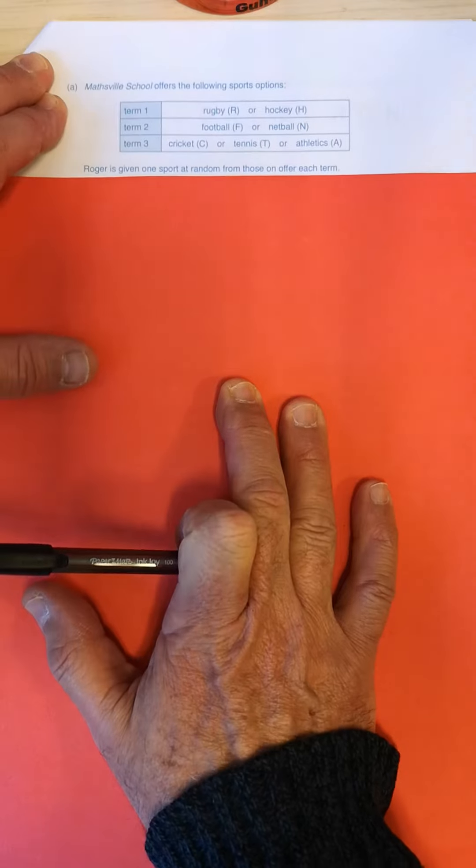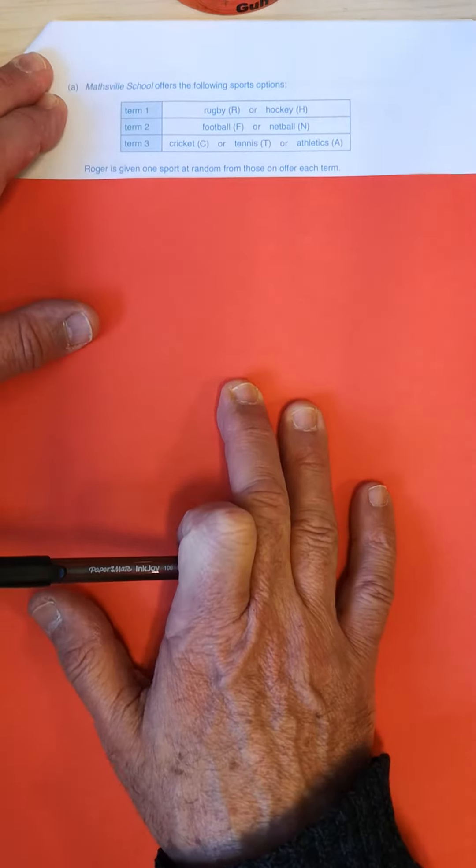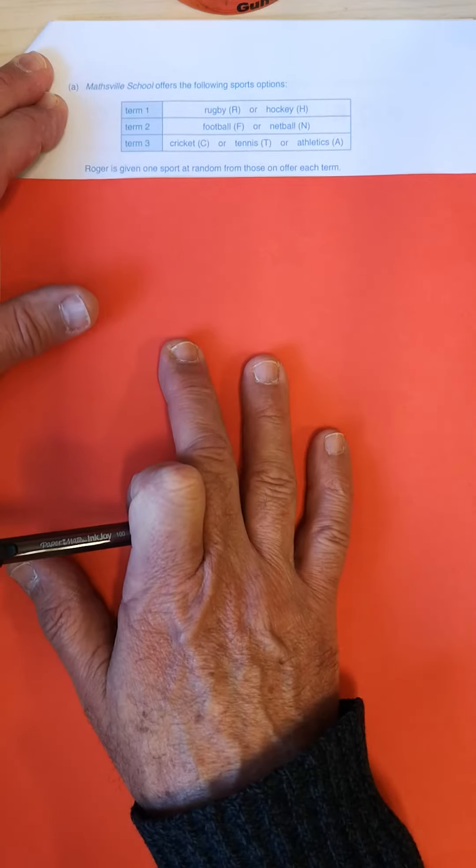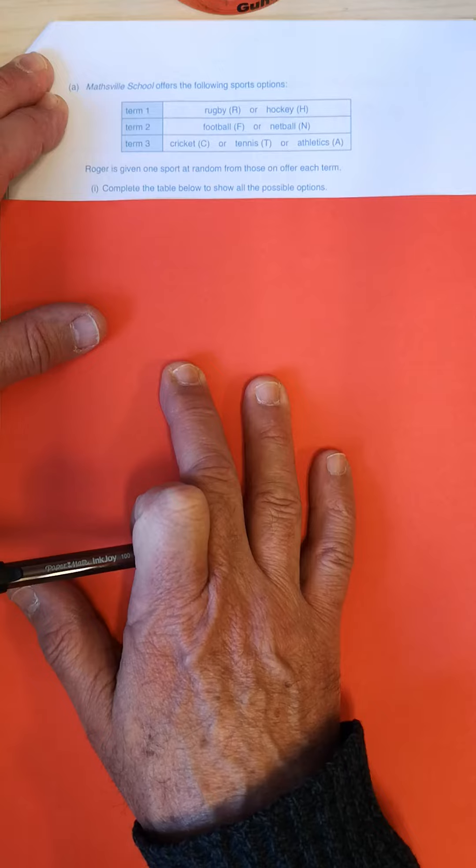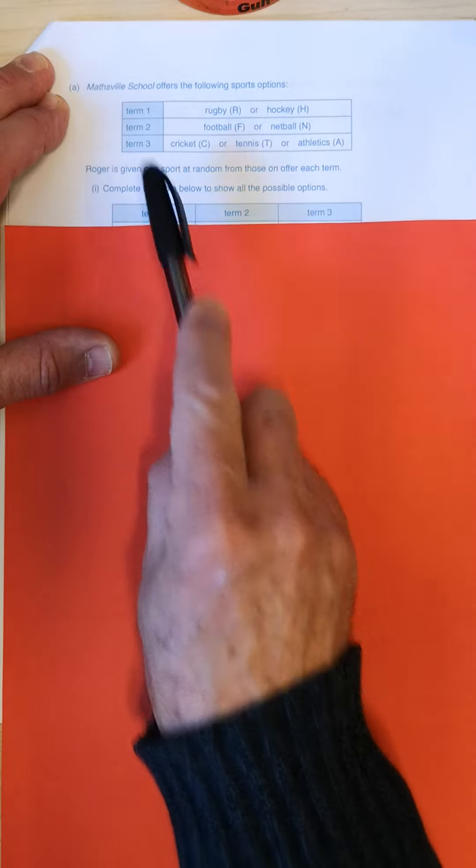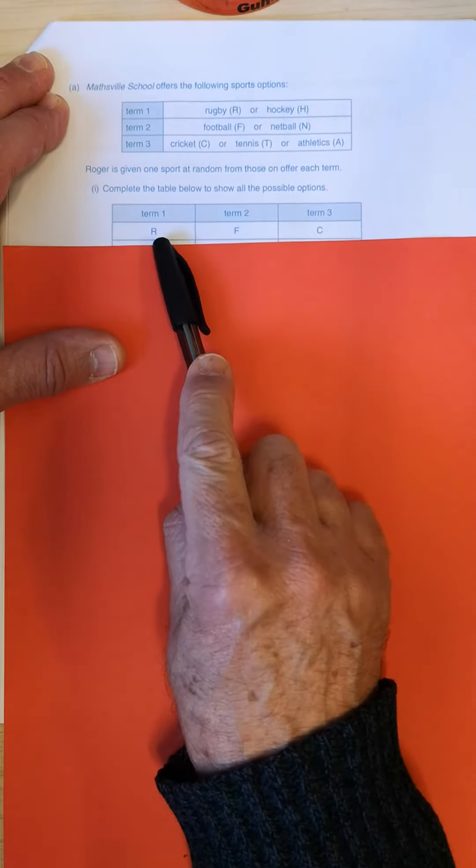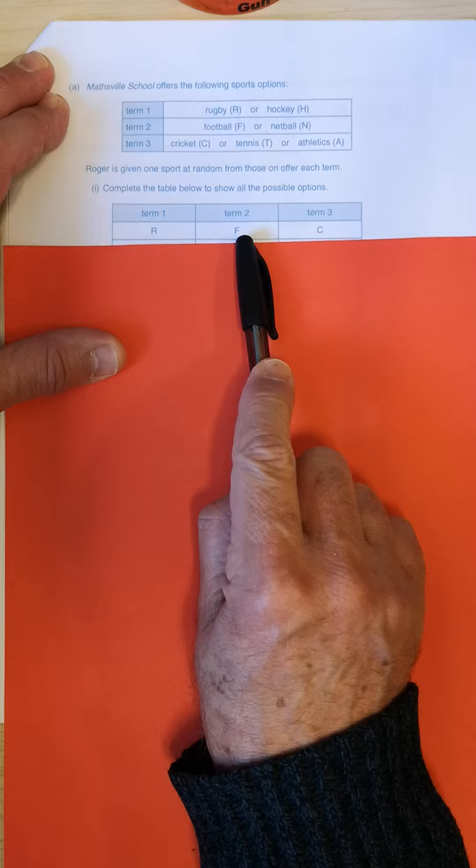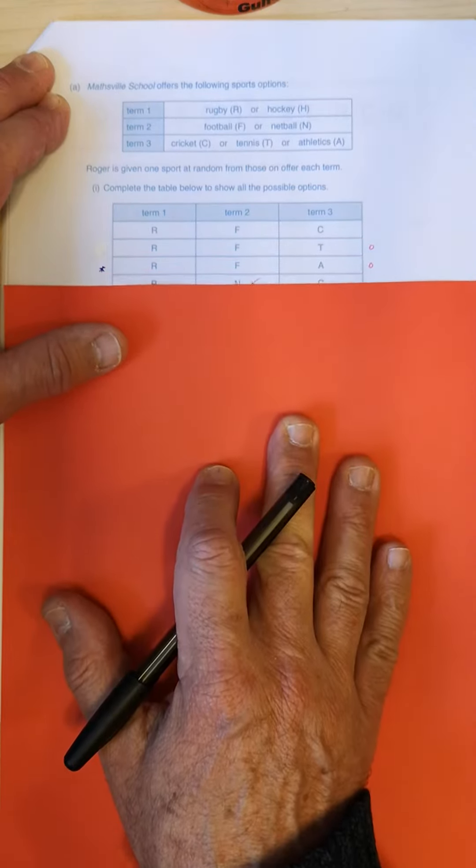Right, so Roger is given one sport at random from those on offer each term. Complete the table below to show all the possible outcomes. There we go. Term one, term two and term three. He could do rugby term one, he could do football and then cricket in term three. And there are the other combinations.